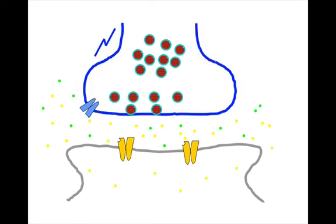When an action potential arrives down the axon to the presynaptic bouton, the voltage-gated calcium channels open, and that allows an influx of calcium ions.